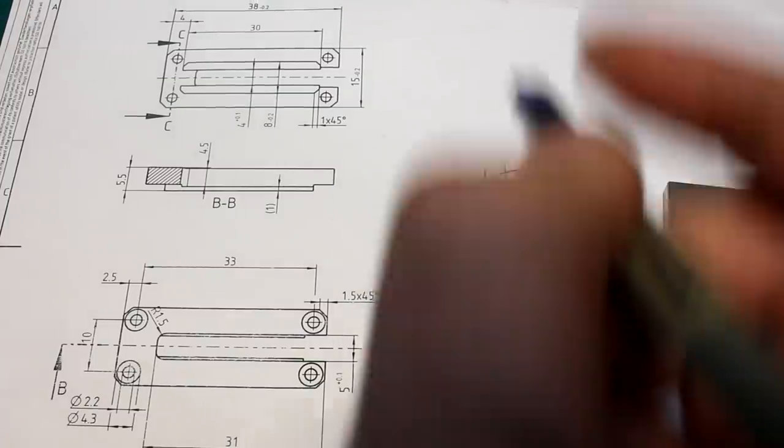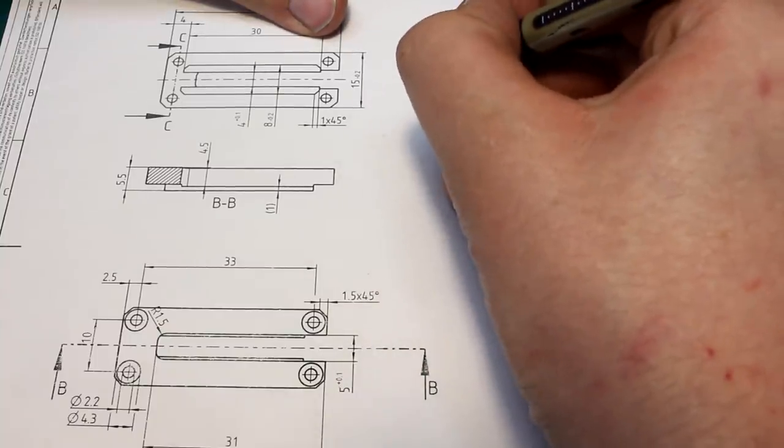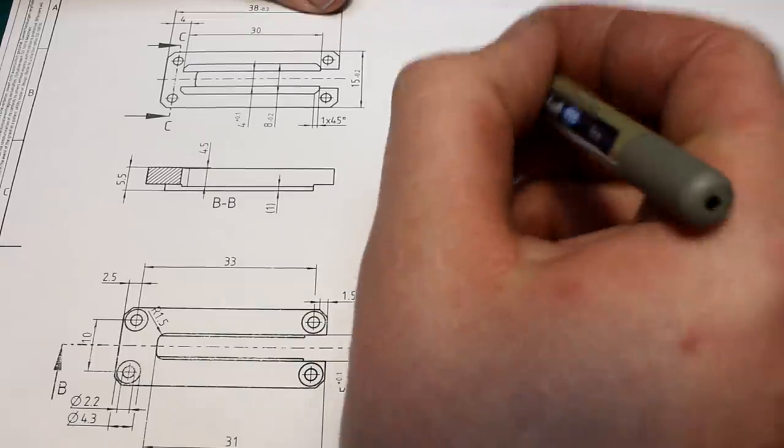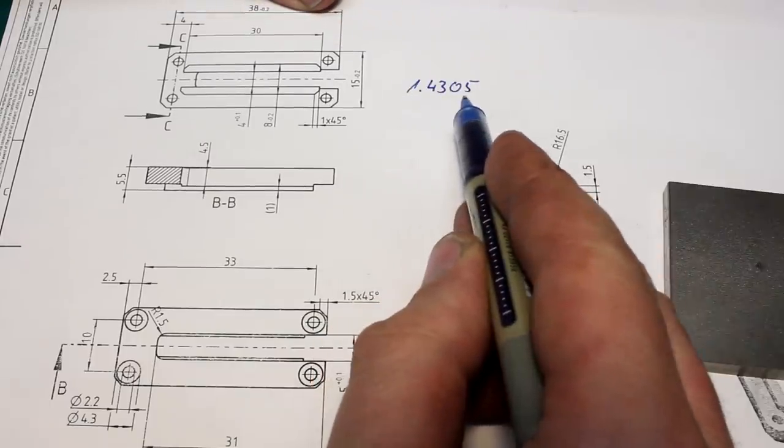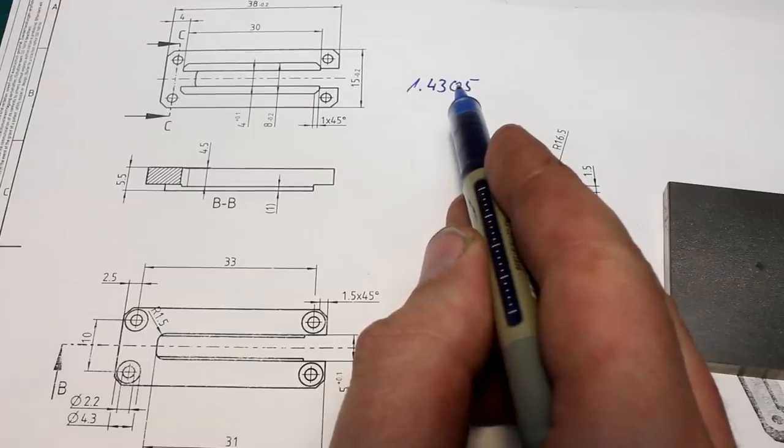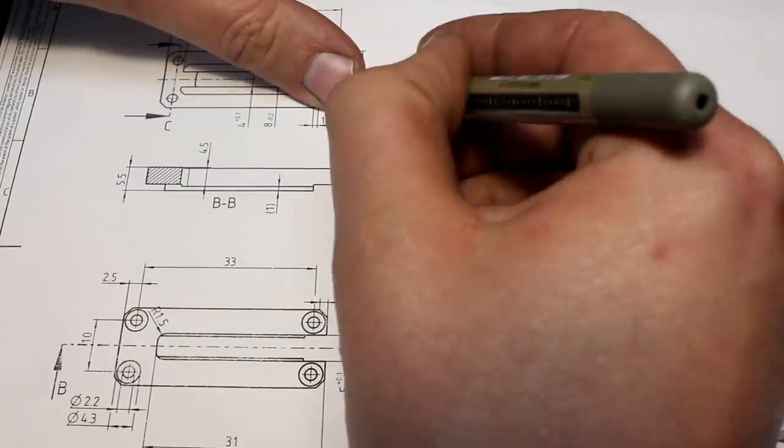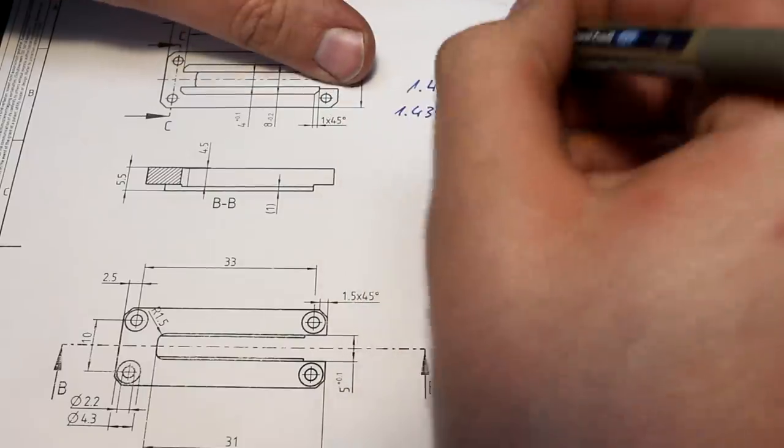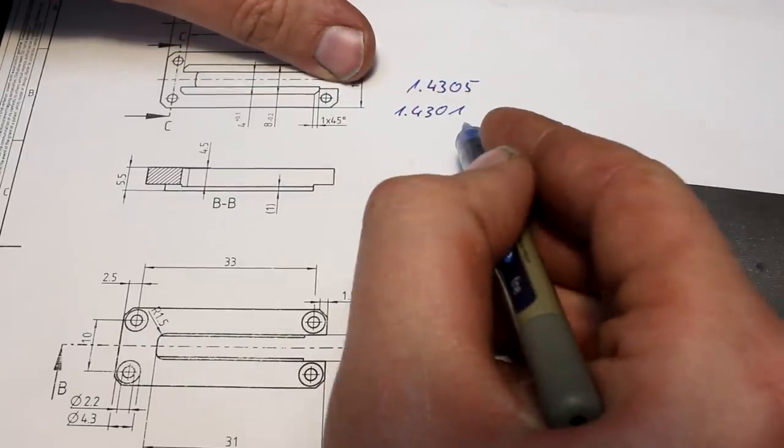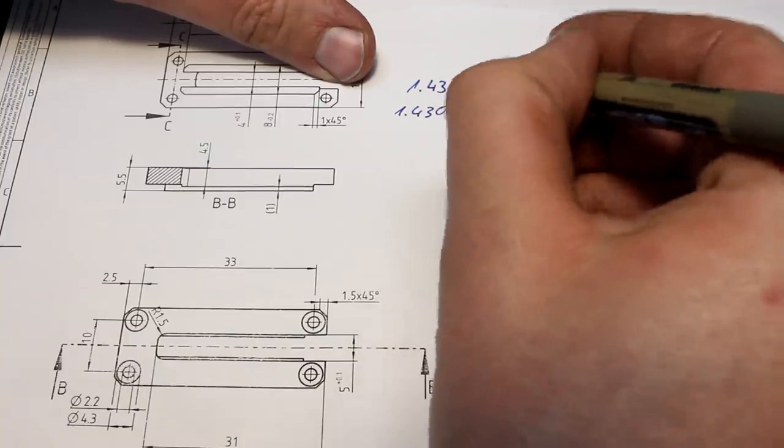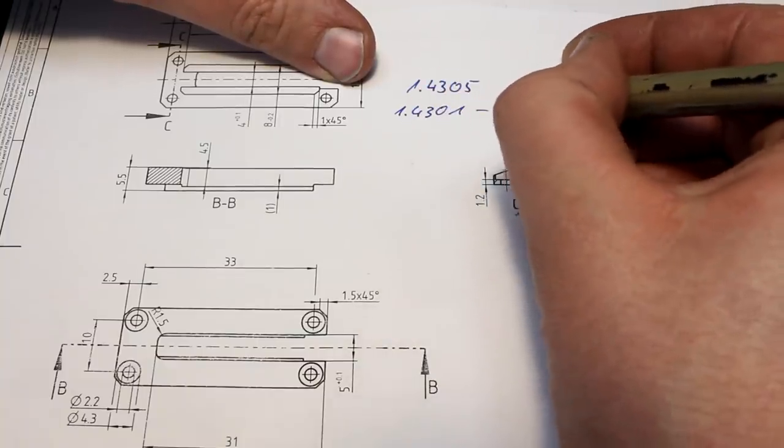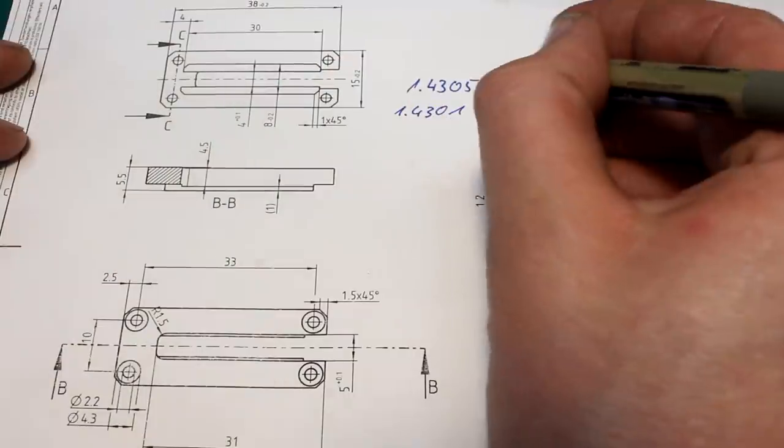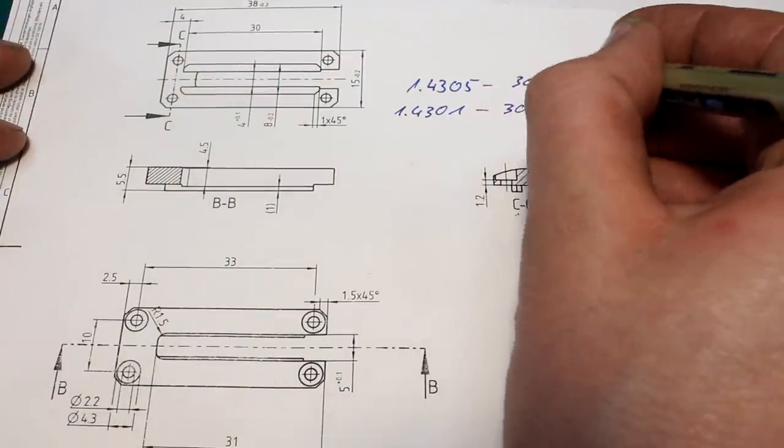The part needs to be machined from stainless steel, 1.4305 or a similar steel. 1.4305 is a free machining quality of stainless. I don't have this one at hand, but I have a 1.4301 here. This is the ISO material number. In the ANSI world, that's a 304 stainless. And the 4305 is a 303 stainless.